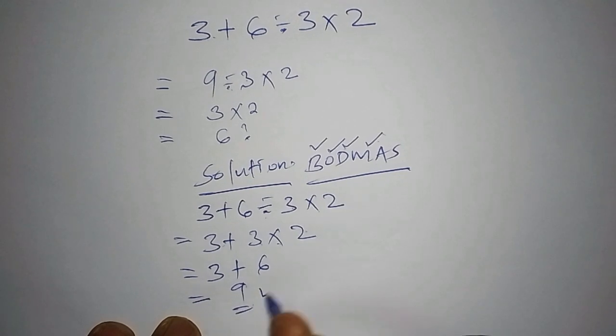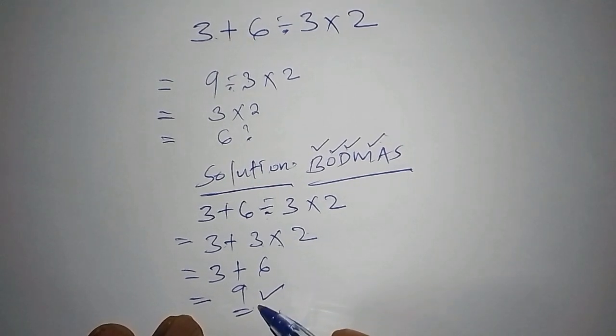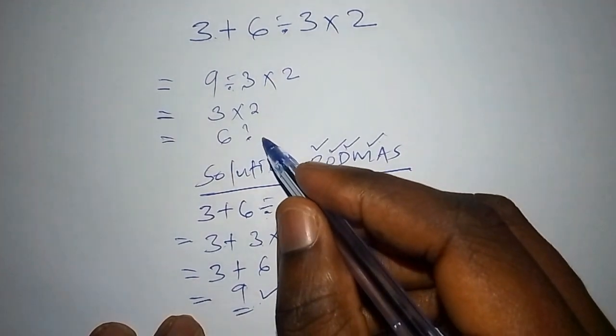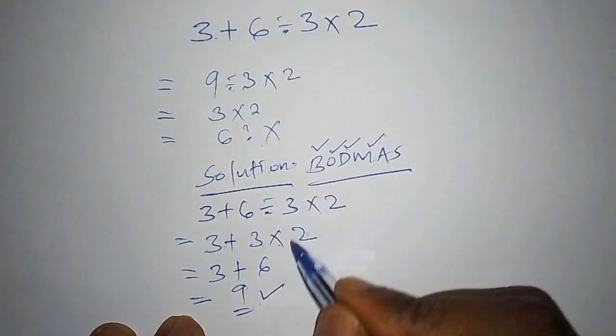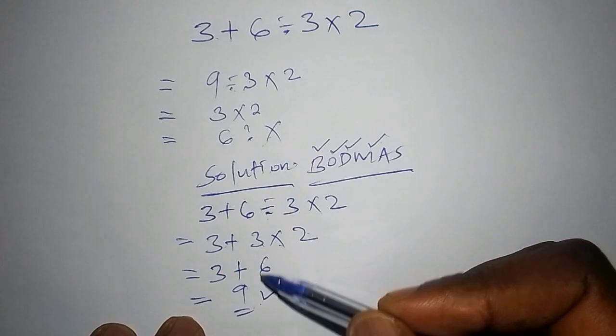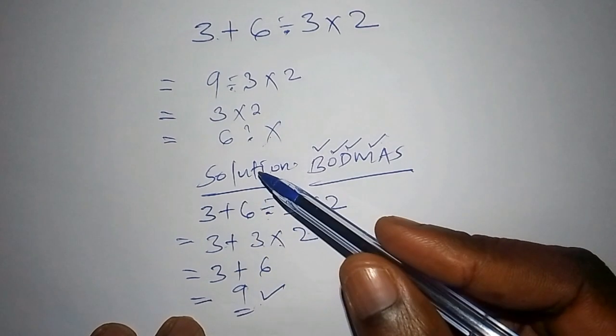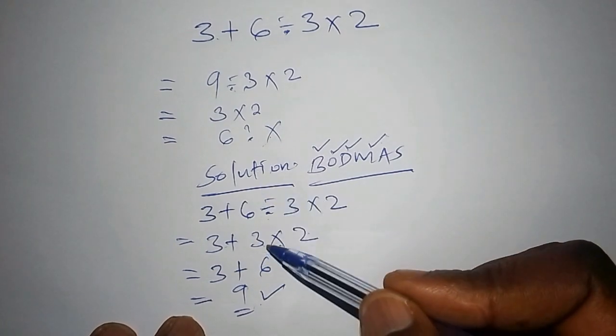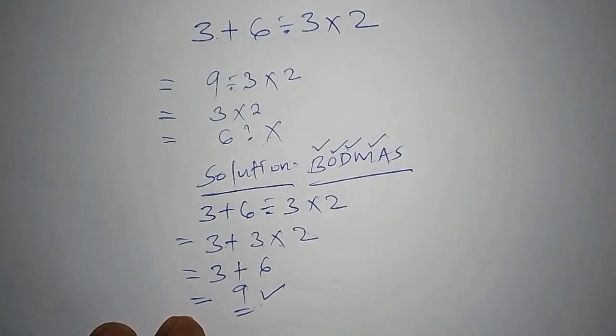So the correct answer using the correct method is 7, not 6, because 6 has not followed the correct method. See you in the next video. Remember to follow and subscribe to this channel. Bye bye till next time.